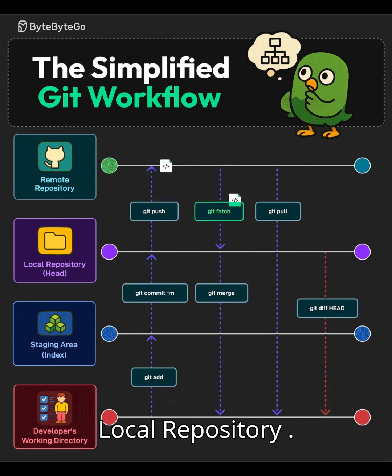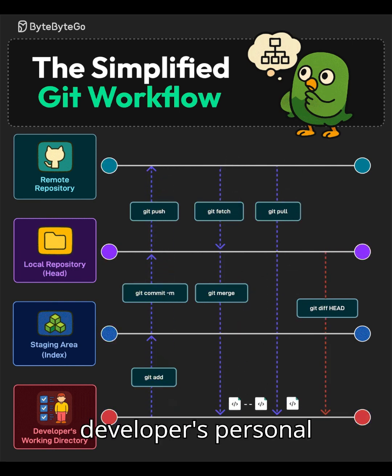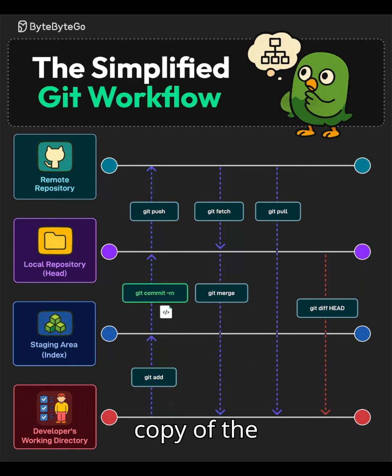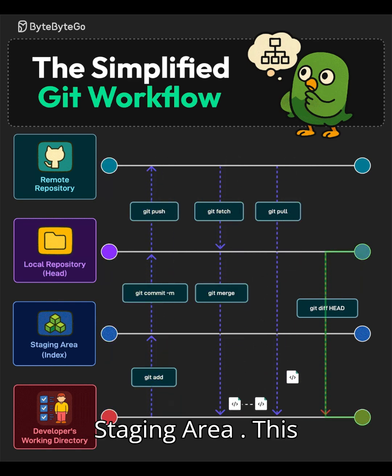The second area is the Local Repository, also called Head. This is the developer's personal copy of the repository. The third area is the Staging Area, also known as the Index, where changes are prepared before committing.